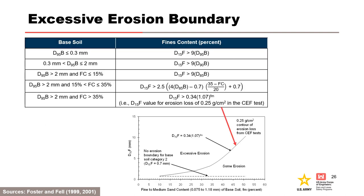The criteria for the excessive erosion boundary uses the equation: D15 of the filter approximately equal to 0.34 times 1.07 raised to the percentage of fine and medium sands (FM). This was obtained by USACE from a curve fit to the 0.25 grams per centimeter squared line in the CEF test. Note that the range of fine to medium sand (FM) is the percentage between 0.075 to 1.18 millimeters in this equation, which is different than ASTM D2487, which defines fine to medium sand as a percentage between 0.075 millimeters and 2 millimeters.